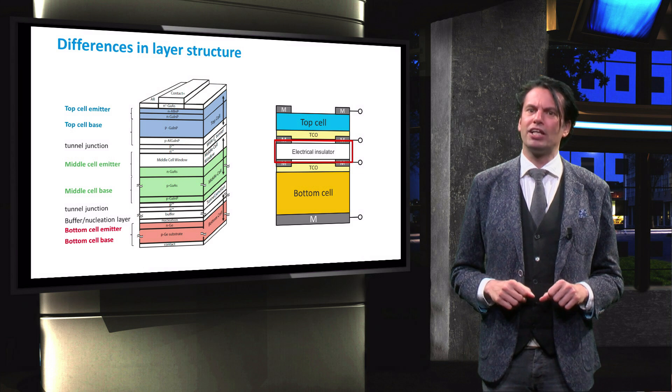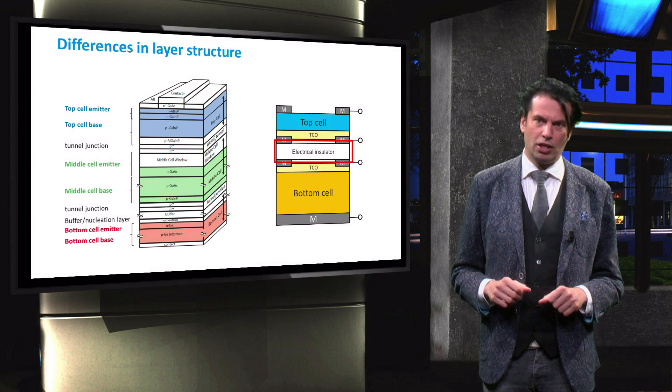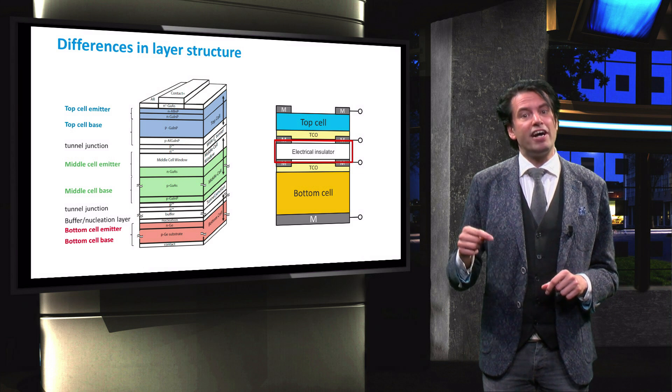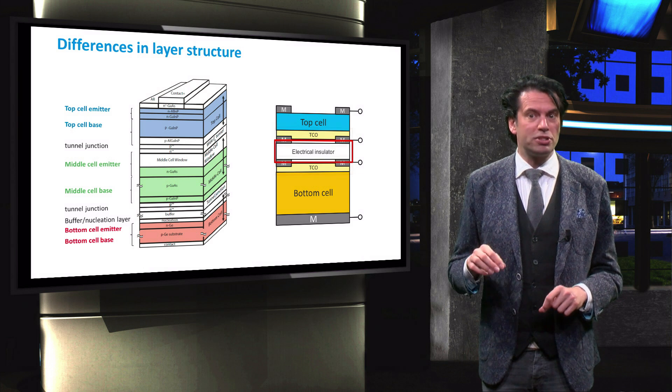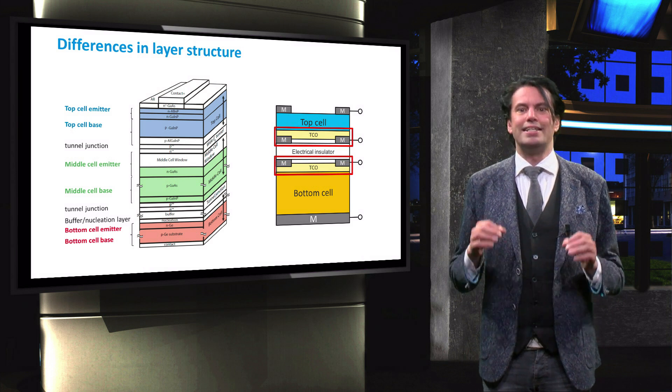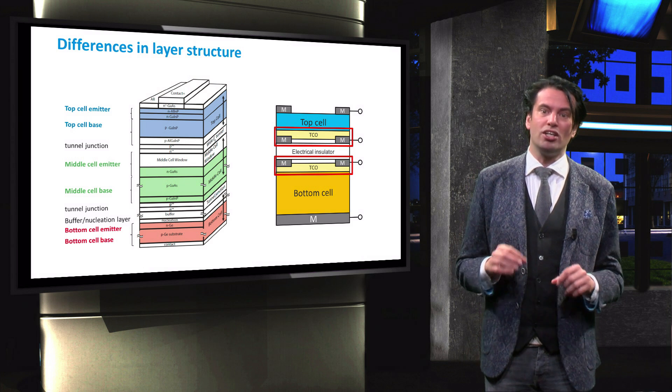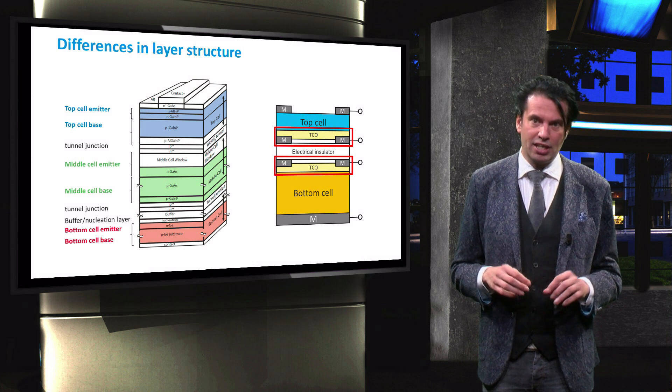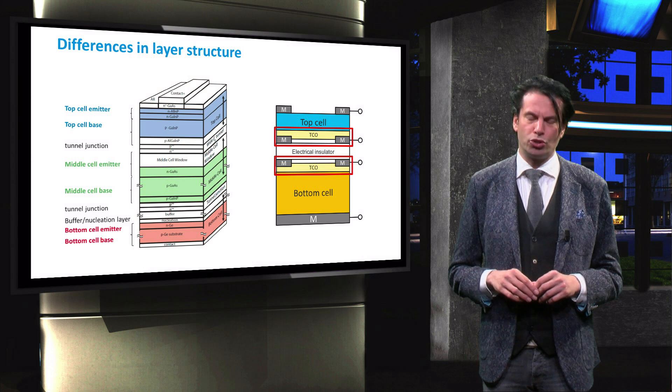The reflective properties of the layer should also be considered. Another additional layer in the device are the contacts on the bottom side of the top cell and on the top side of the bottom cell. These layers can also cause undesired absorption and reflection and should therefore be chosen carefully.